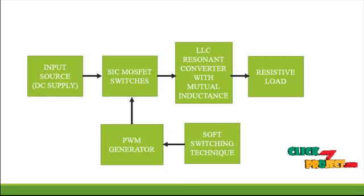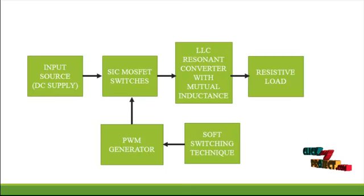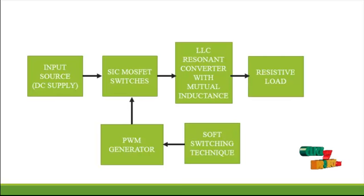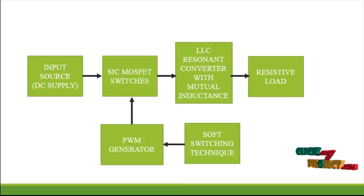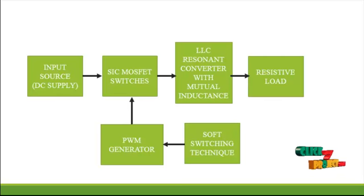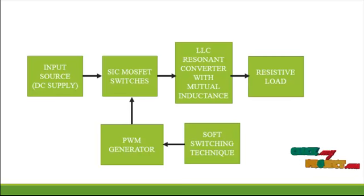The technique used is called soft switching. There are two kinds of soft switching techniques: ZVS and ZCS. ZVS is zero voltage switching and ZCS is zero current switching. The pulses generated by these techniques are fed to the SiC MOSFET switches.